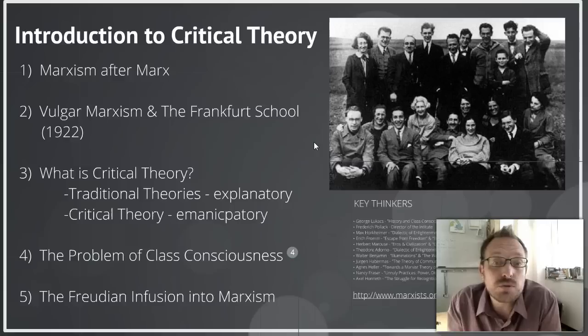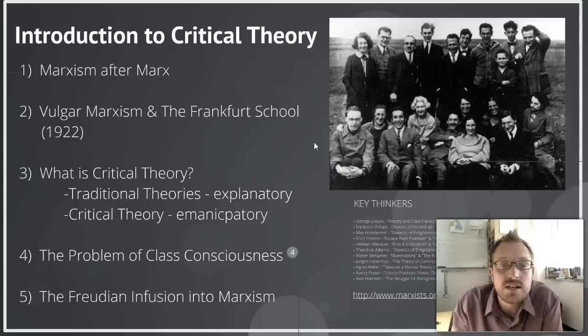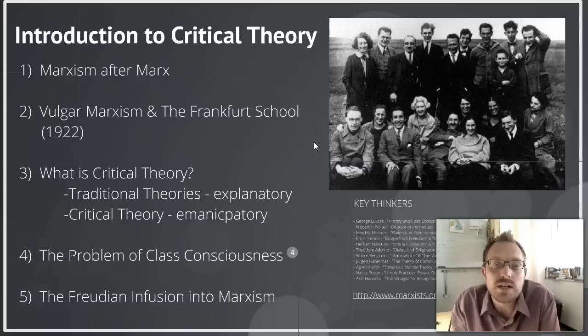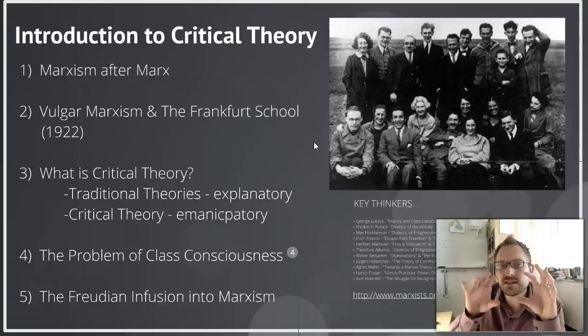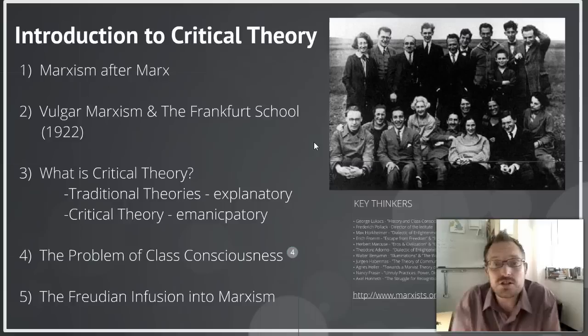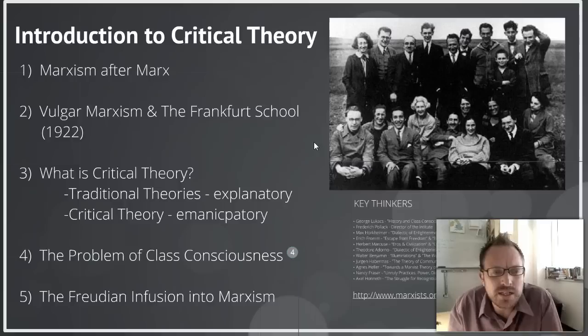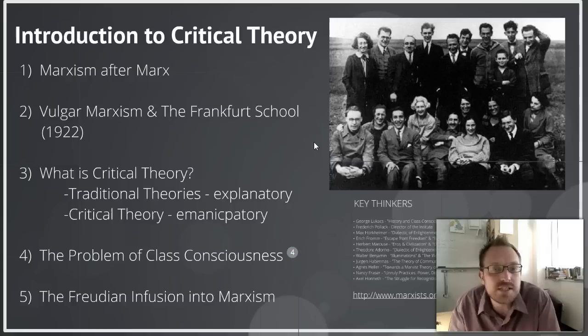The Frankfurt School theorists essentially think it must be a problem with consciousness, because Marx's original theory stipulated that prior to there being a revolution, the proletariat — that is, the workers — must become conscious of their situation. This state of consciousness is what allows the proletariat to emerge. The proletarian class consciousness never happens. So the Frankfurt School organized in Frankfurt, Germany, and eventually created an institute related to the university, which eventually became known as the Frankfurt School.